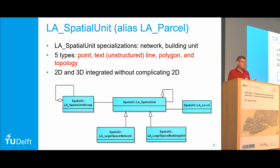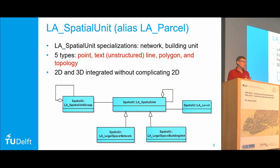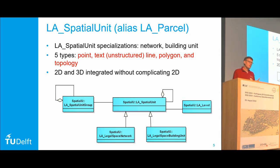A spatial unit has a number of specializations. It can exist in 2D and in 3D in this ISO standard. It can be a symbol, a text description, a single point, a polygon, or a topology structure. It tries to integrate both 2D and 3D representations without complicating the existing 2D registrations.